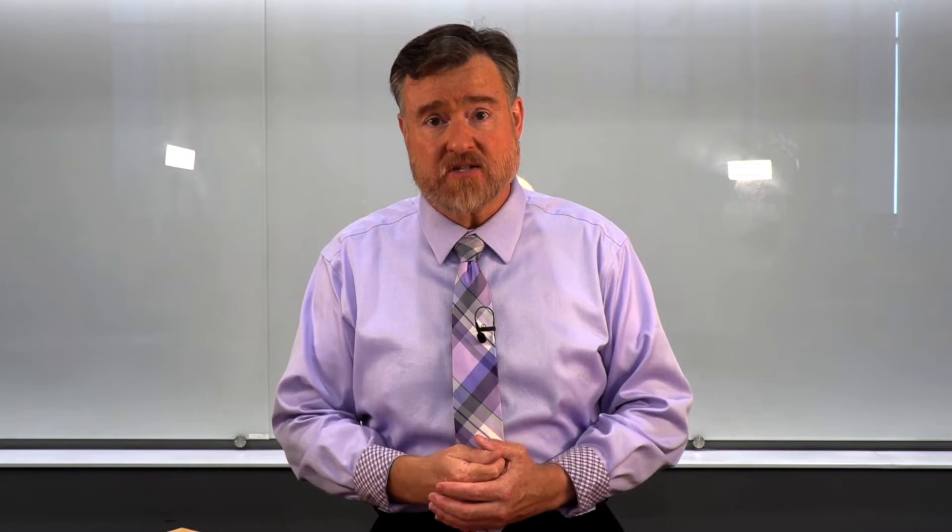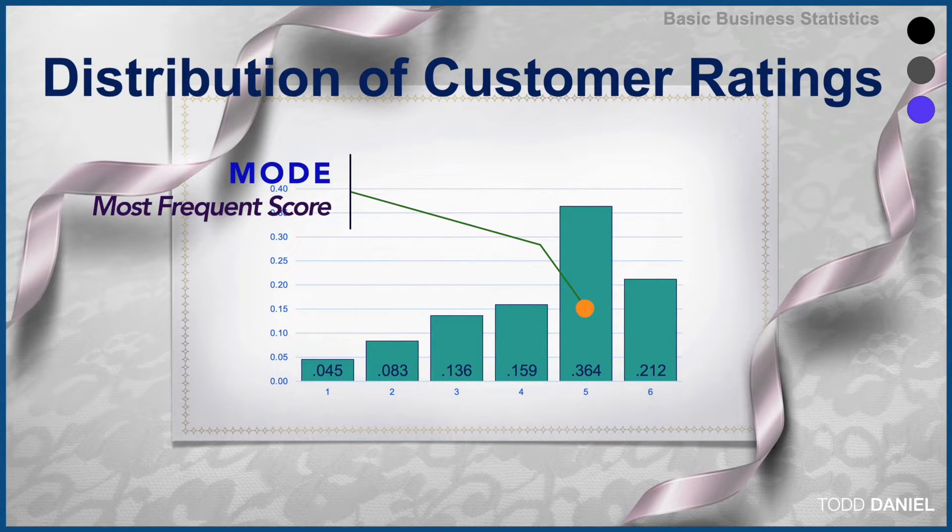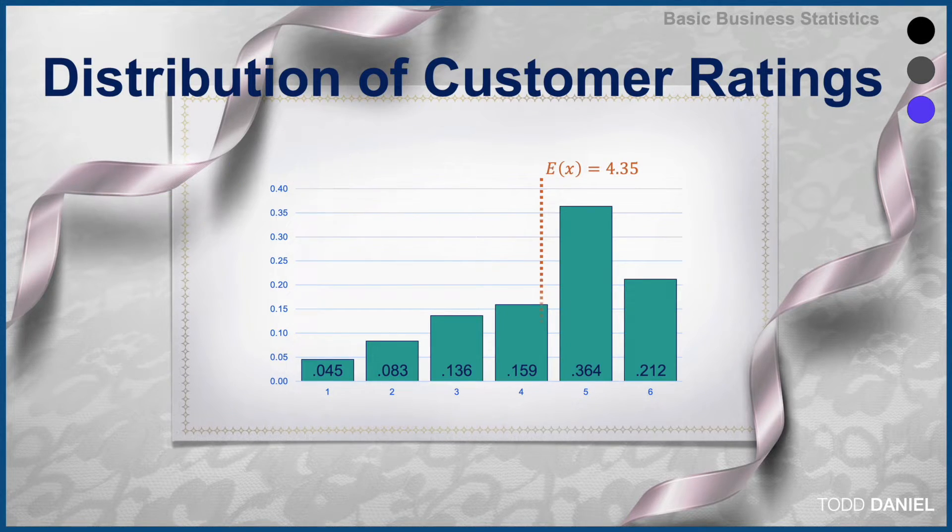Once we have the data, we can create a distribution of the customer ratings. The distribution looks like this. The mode number of stars assigned is 5, but the average number of stars assigned is 4.35.